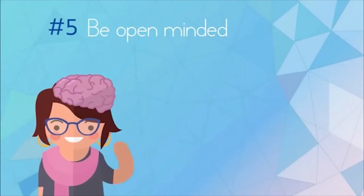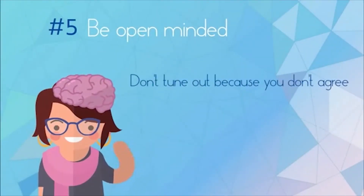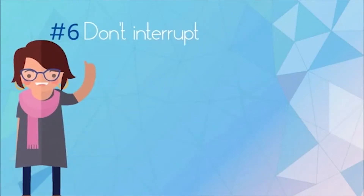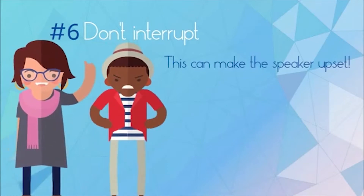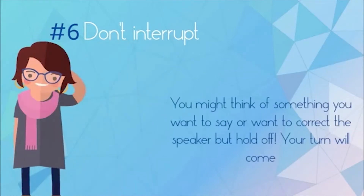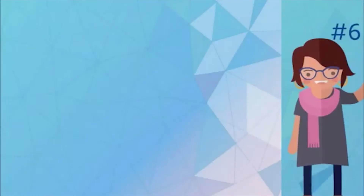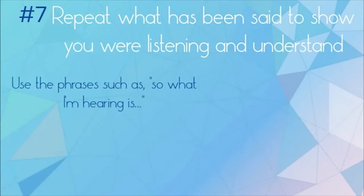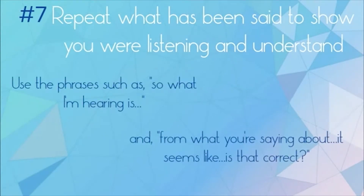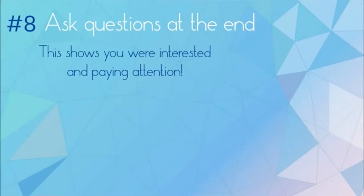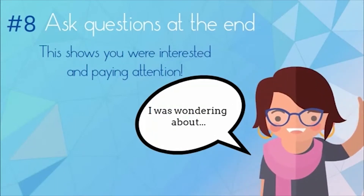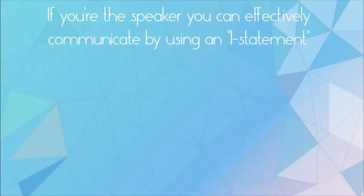Step five: be open-minded — don't tune out because you don't agree. Consider everyone's opinion and neutralize your feelings. Don't interrupt; this can make the speaker upset. You might think of something you want to say or want to correct the speaker, but hold off — your turn will come. Repeat what has been said to show you are listening and understand, using phrases such as 'so what I'm hearing is' and 'from what you're saying it seems like — is that correct?' Ask questions at the end to show you are interested and paying attention.